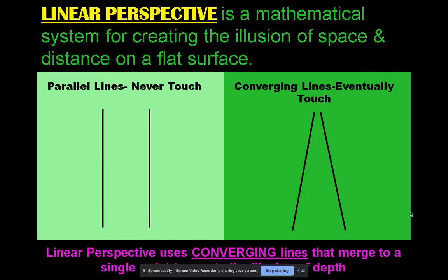It uses parallel lines and converging lines. Parallel lines are lines that run next to each other that never touch — they have equal space between them. Converging lines are lines where the space between them narrows and narrows until they eventually touch.